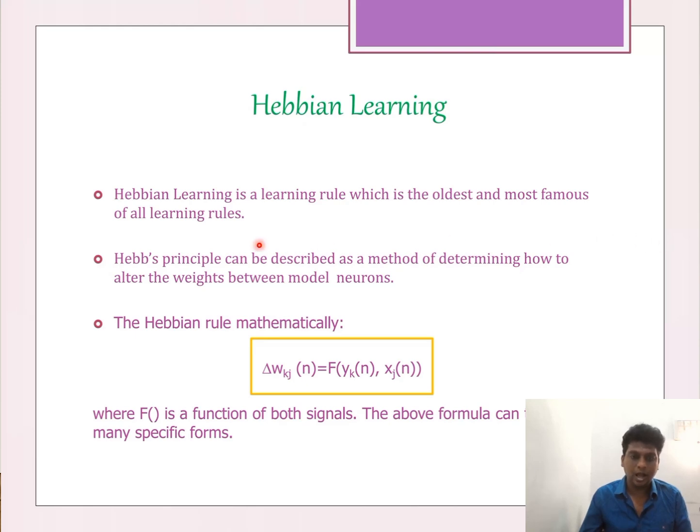Hebbian learning is a hypothesis-based learning. This method of weight updation enables neurons to learn and was named Hebbian learning. The main functions are that information is stored in the connections between neurons in a neural network in the form of weights. Changes between the neurons are proportional to the product of activation values for the neurons.